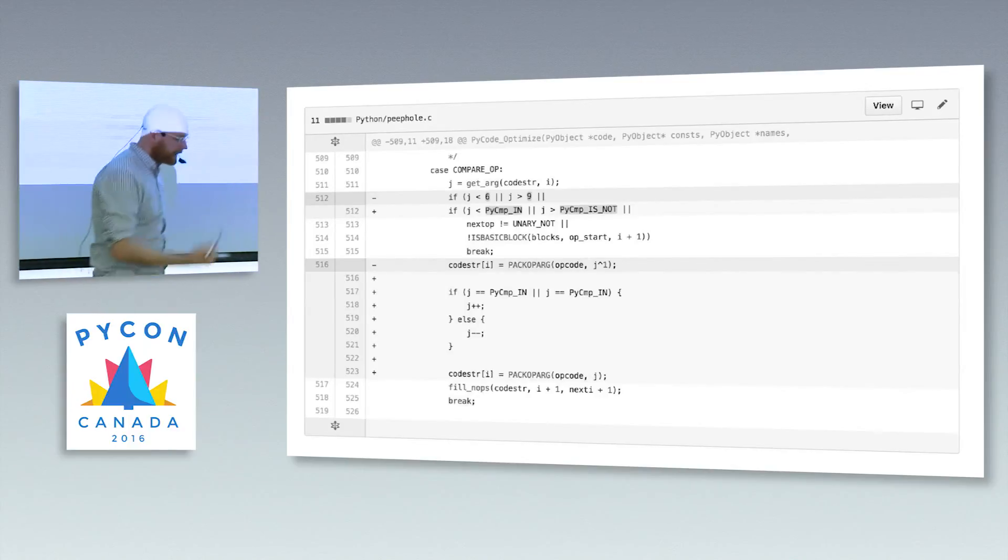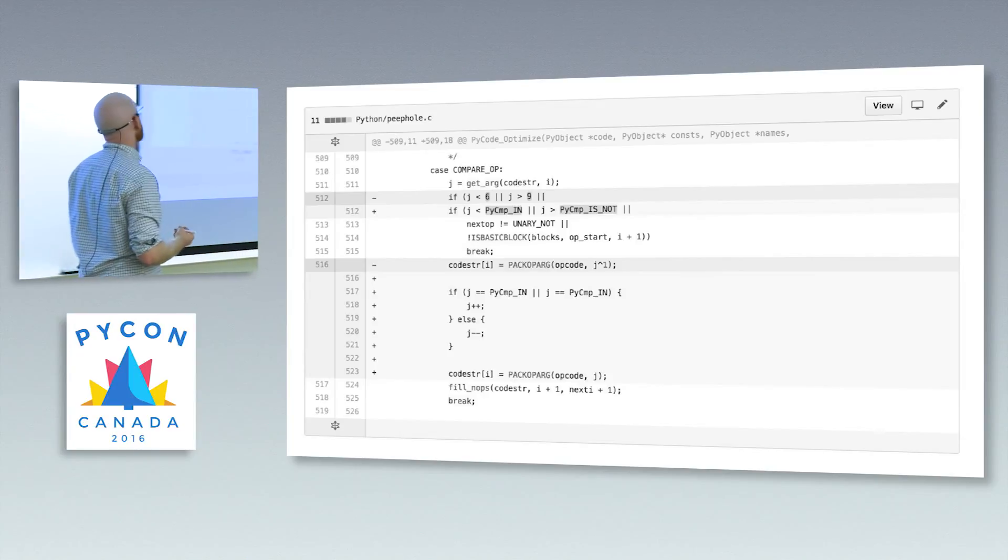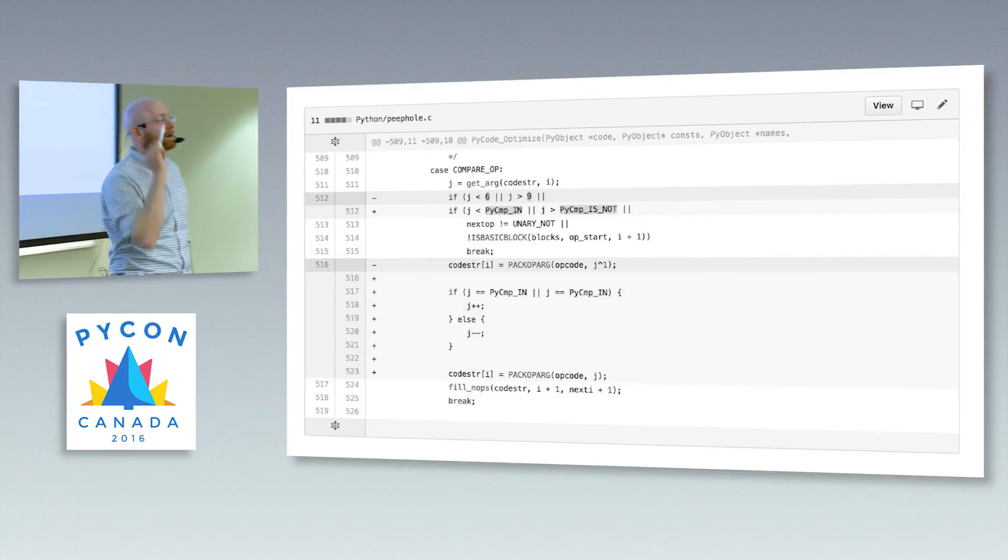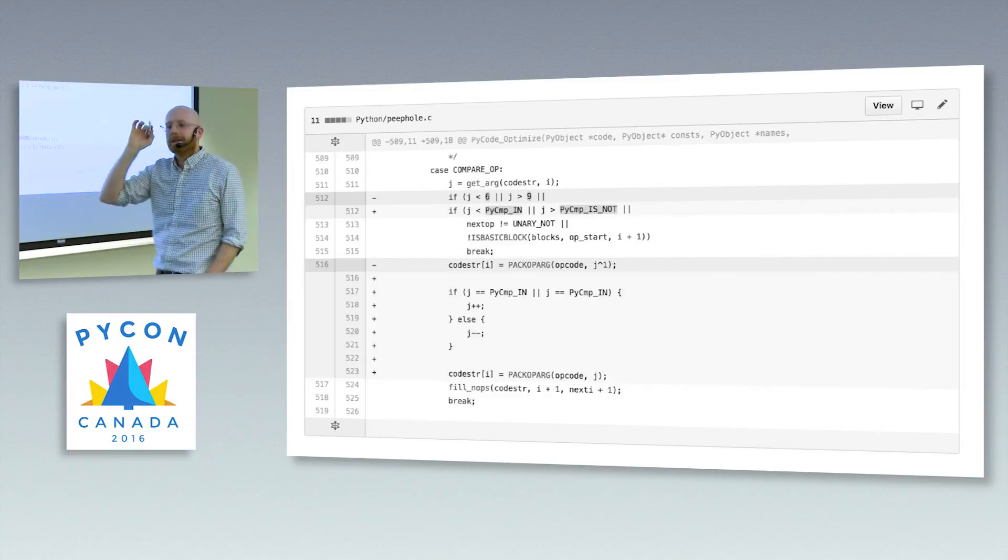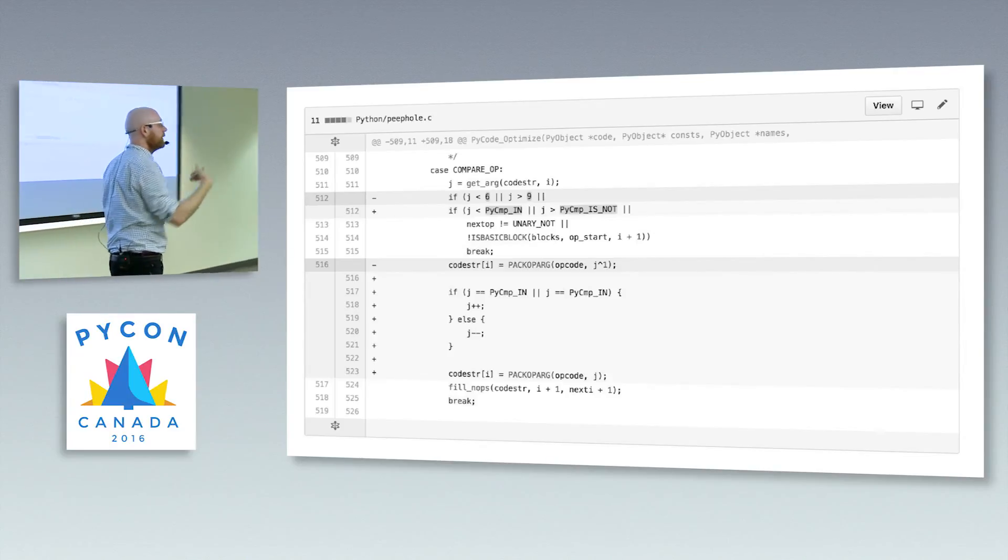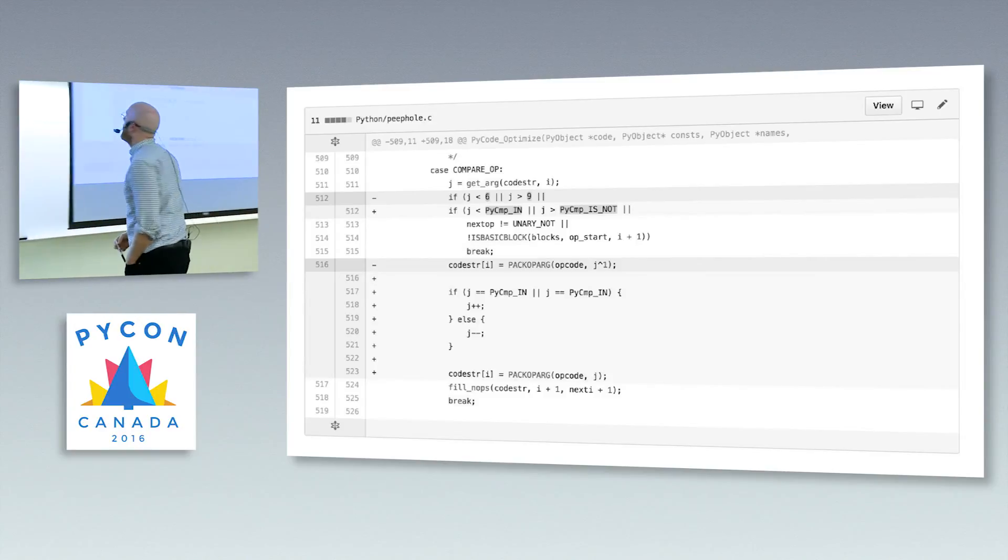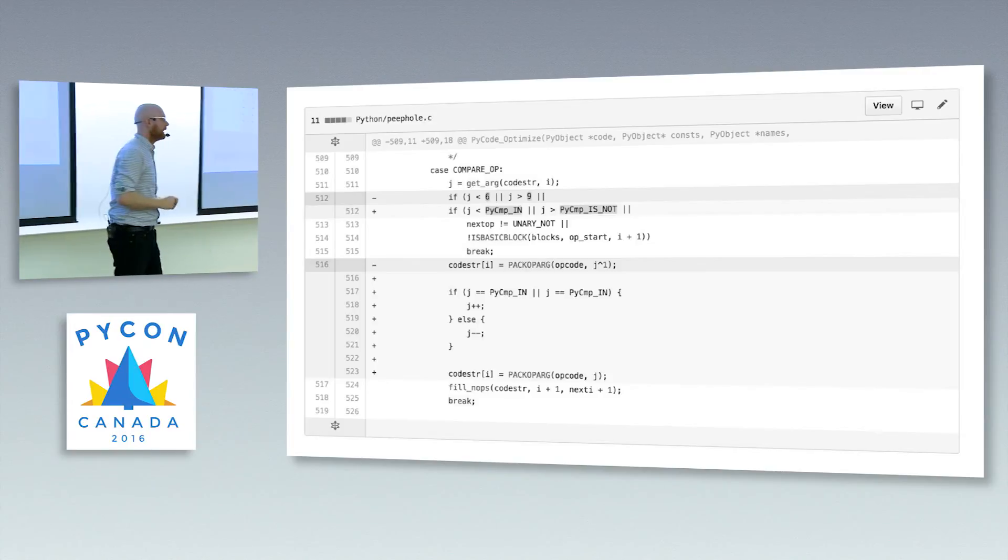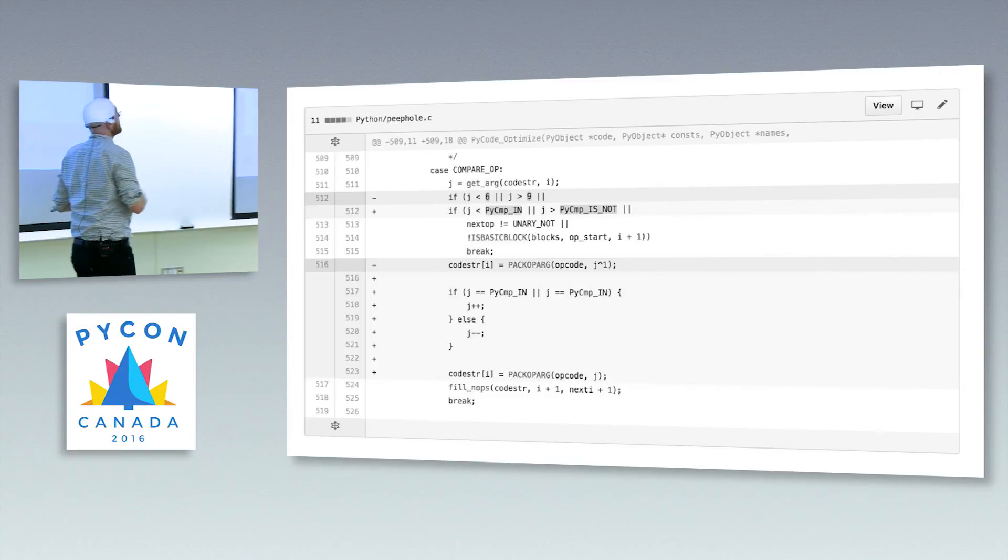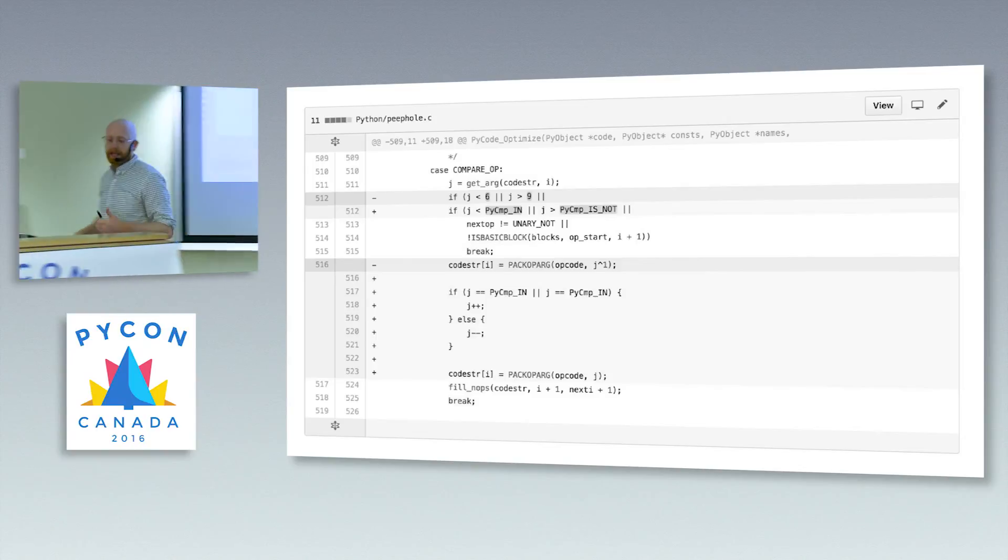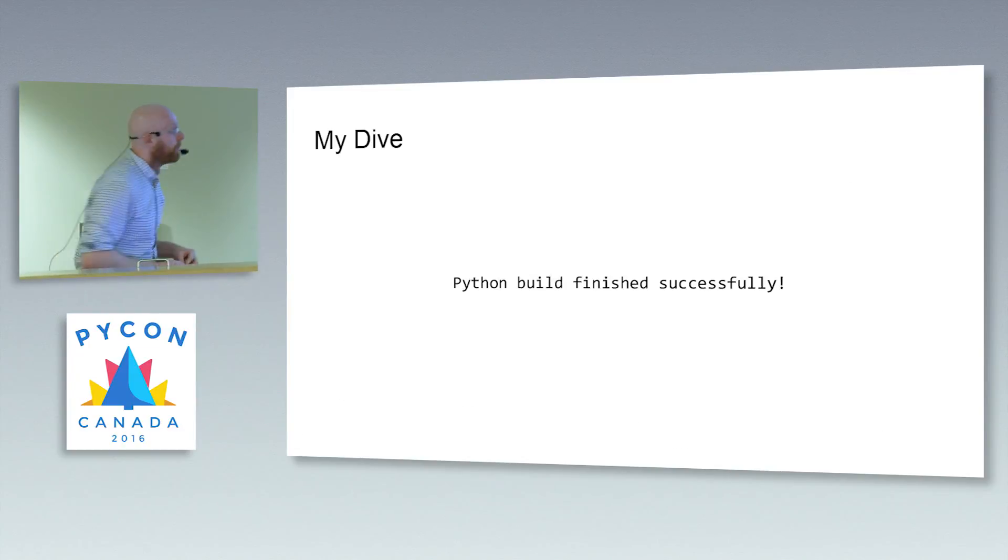But I realized that there was some optimization going on in peephole. And peephole, they couldn't pick a creepier name for a file. But it looks ahead a little bit at your Python bytecode and says, can I make an optimization based on what I know is coming next? And I hadn't updated this file to account for some of the optimizations that were being done. And my cat ears were now being considered an in operator. So I went in and adjusted that a little bit. This was 2 a.m. on a Sunday morning, so pretty tired. But I got this. Python build finished successfully.